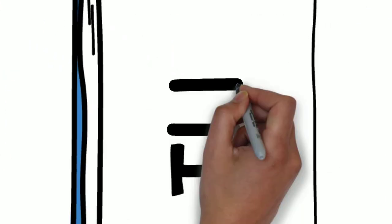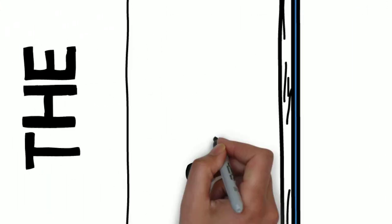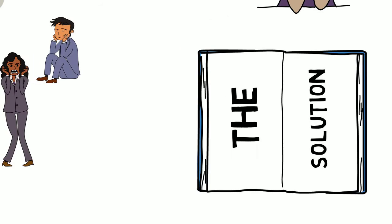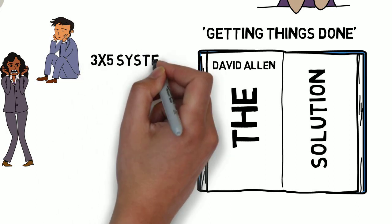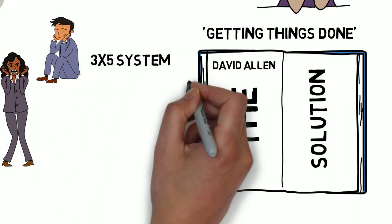The solution that I've found extremely helpful comes from productivity consultant David Allen, who is known for his book and methodology, Getting Things Done. He calls this system the 3x5 system and involves a pen and a stack of 3x5 index cards.